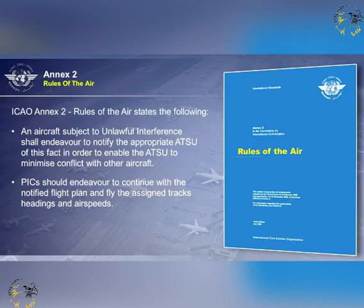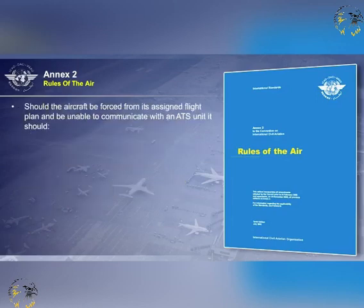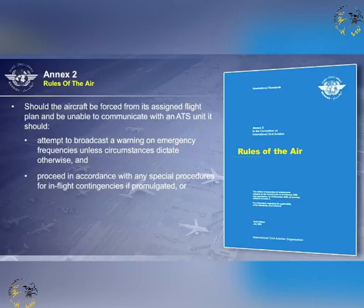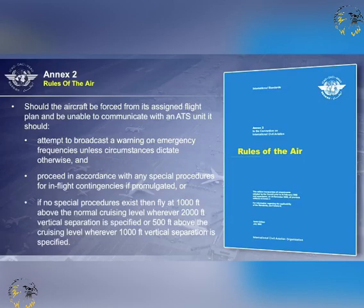Pilots in command should endeavour to continue with the notified flight plan and fly the assigned tracks, headings, and air speeds. Should the aircraft be forced from its assigned flight plan and be unable to communicate with an air traffic service unit, it should attempt to broadcast a warning on emergency frequencies unless circumstances dictate otherwise, and proceed in accordance with any special procedures for in-flight contingencies where such procedures have been established. If no special procedures exist, fly at 1,000 feet above the normal cruising level wherever 2,000 feet vertical separation is specified, or 500 feet above the cruising level wherever 1,000 feet vertical separation is specified.